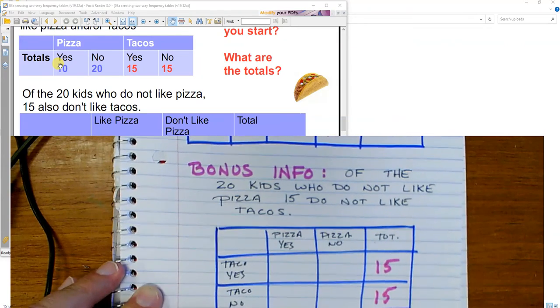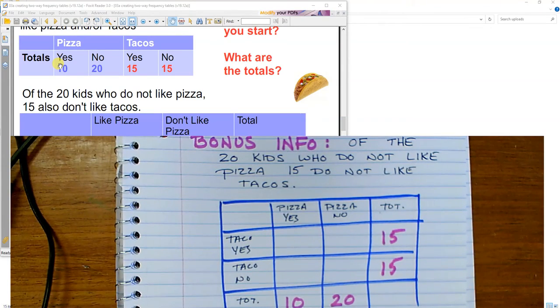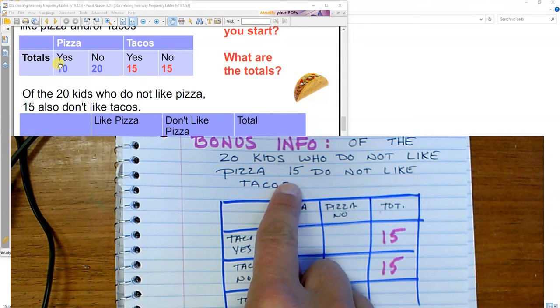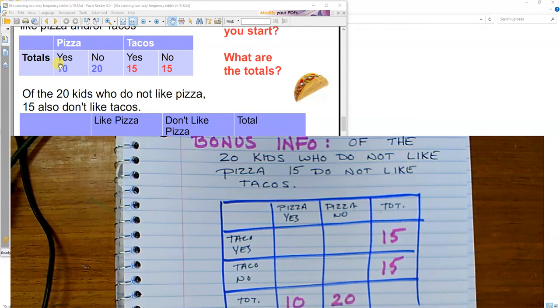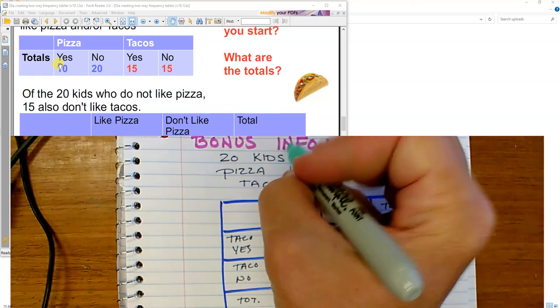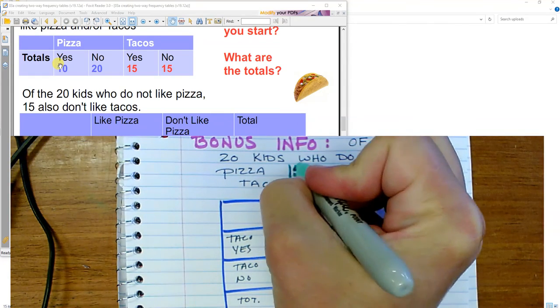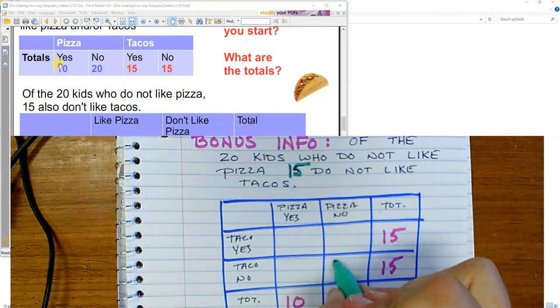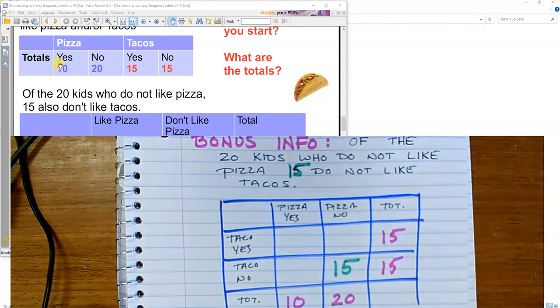My bonus is right here. Of the 20 kids who do not like pizza, 15 do not like tacos. So I've got 15 kids that don't like pizza or tacos. No to pizza, no to tacos. 15 kids.